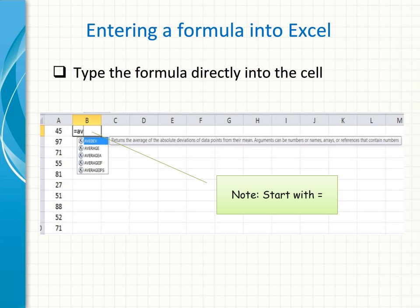Firstly, if we know the formula, we can type it directly into a cell. Note that when you type a formula into a cell, you have to start with the equal sign. The equal sign is what tells Excel that what's in the cell is a formula.